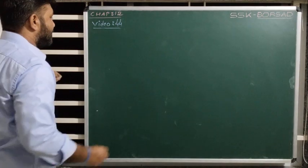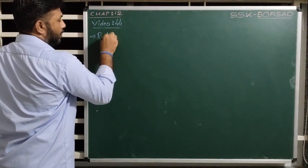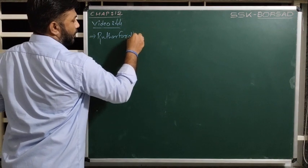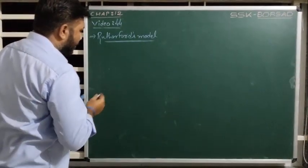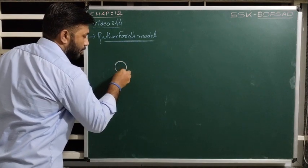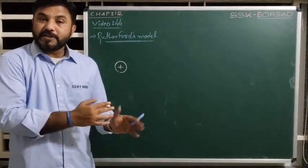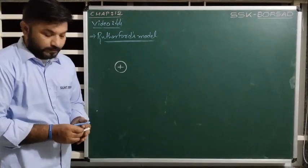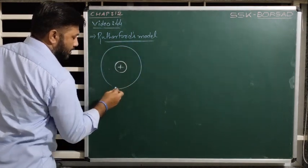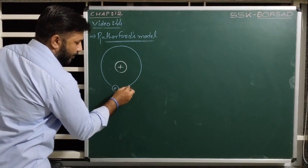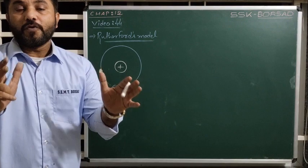So let us see what were the assumptions of Rutherford's model. According to Rutherford, the central part of an atom consists of all the mass of that atom and a positive charge, and it is known as the nucleus. Electrons are revolving around the nucleus in circular orbits. This was given by Rutherford, but there are a few problems.